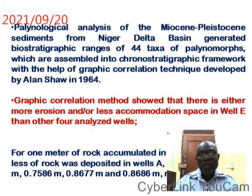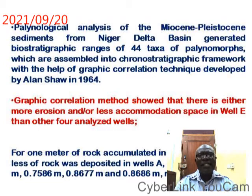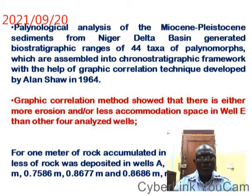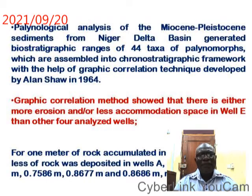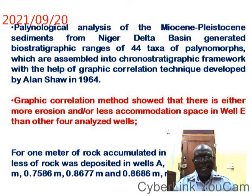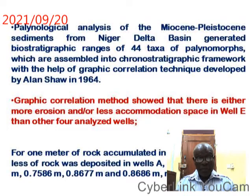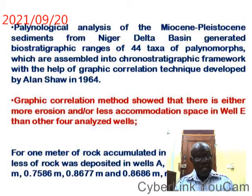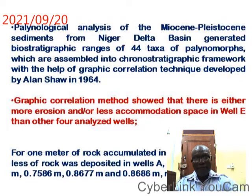Conclusion. Palynological analysis of the Miocene-Pliocene sediments from the Niger Delta generated biostratigraphic ranges of 44 taxa of palynomorphs, which are assembled into a chronostratigraphic framework with the help of graphic correlation techniques developed by Alan Shaw in 1964. Graphic correlation methods show that there is either more erosion or less accommodation space in well E than in the other four wells analyzed — for one meter of rock accumulated in well E, fewer meters of rock were deposited in wells A, B, C, and D.